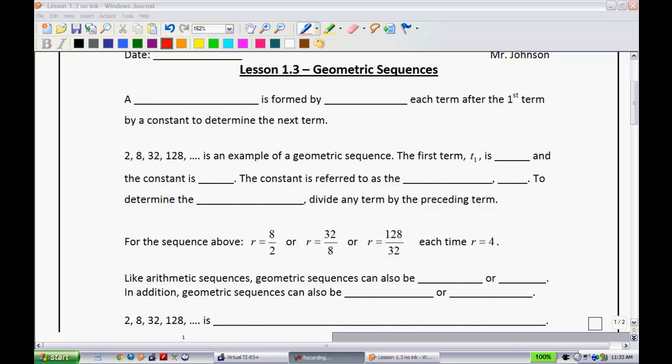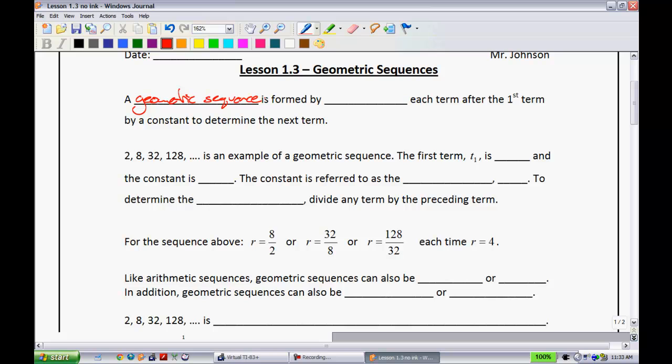Alright, so far we've been looking at arithmetic sequences and series, and now we're going to move into the realm of geometric sequences and series, specifically geometric sequences right now. A geometric sequence is formed by, instead of adding or subtracting what we did with arithmetic sequences, we're going to be multiplying each term after the first term by a constant to determine the next term. Remember that sequence 1, 2, 4, 8, 16? That was an example of one that's going to be geometric.